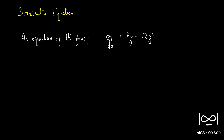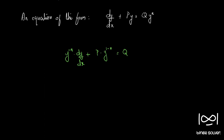In such questions we divide the equation throughout by y^n, giving us y^(−n)·dy/dx + P·y^(1−n) = Q. Then we use the substitution y^(1−n) = v.